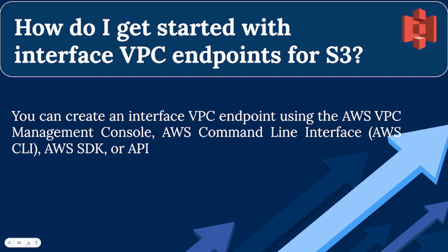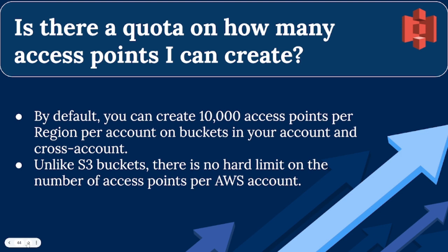Question 11: Is there a quota on how many access points I can create? By default, you can create 1,000 access points per region per account on buckets in your account and cross-account. Unlike S3 buckets, there is no hard limit on the number of access points per AWS account.